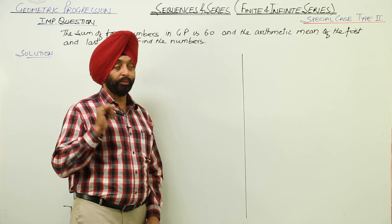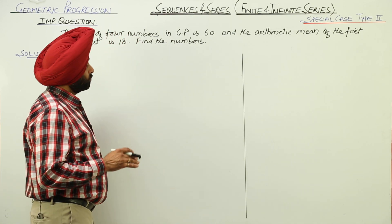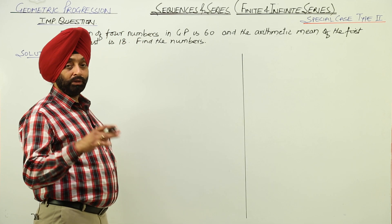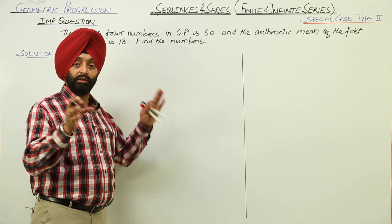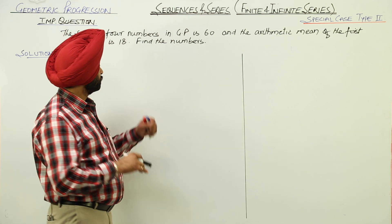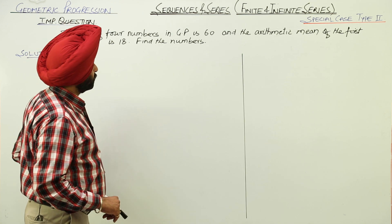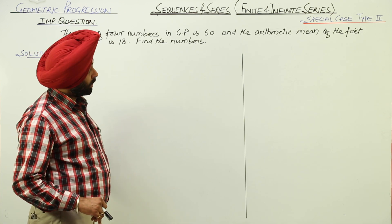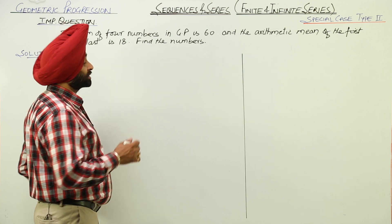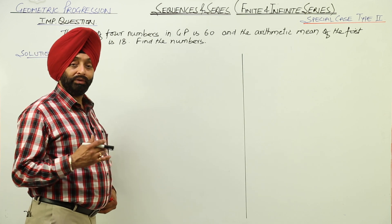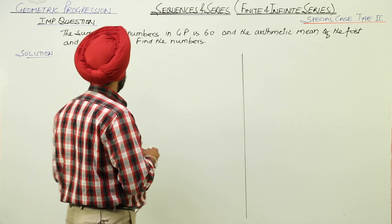Special case type 2. In this question, we are having arithmetic mean and GP both in the same question. The sum of the 4 numbers in GP is 60, and the arithmetic mean of the first and the last is 18. We have to find the GP series.